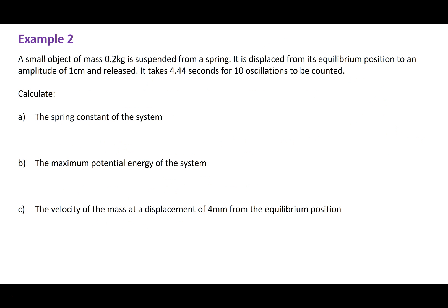Let's take a look at another example. This time, we're told that a small object of mass 0.2 kilograms is suspended from a spring. It's displaced from its equilibrium position to an amplitude of 1 centimetre, which is 1 times 10 to the minus 2 metres. And we're told not what its time period is, but how long it takes for 10 oscillations. So the time period will be the time taken divided by the number of oscillations, giving us 0.444 seconds.